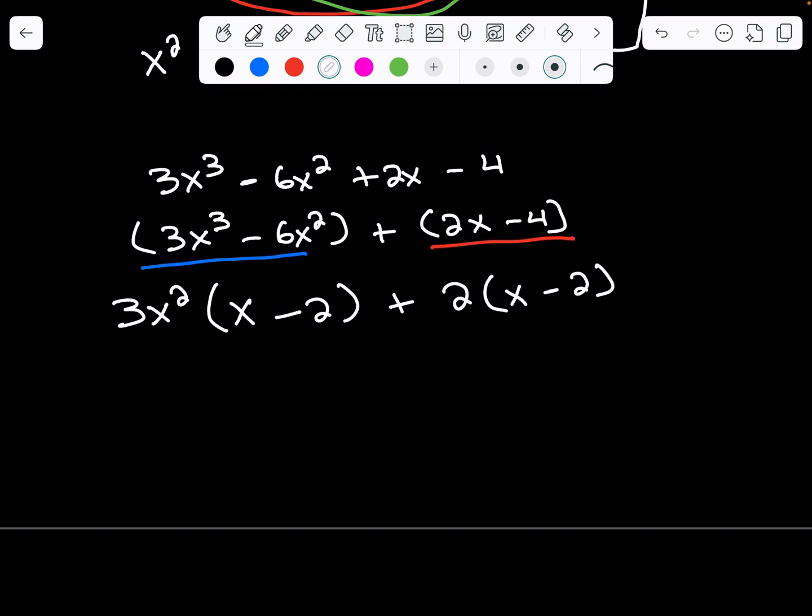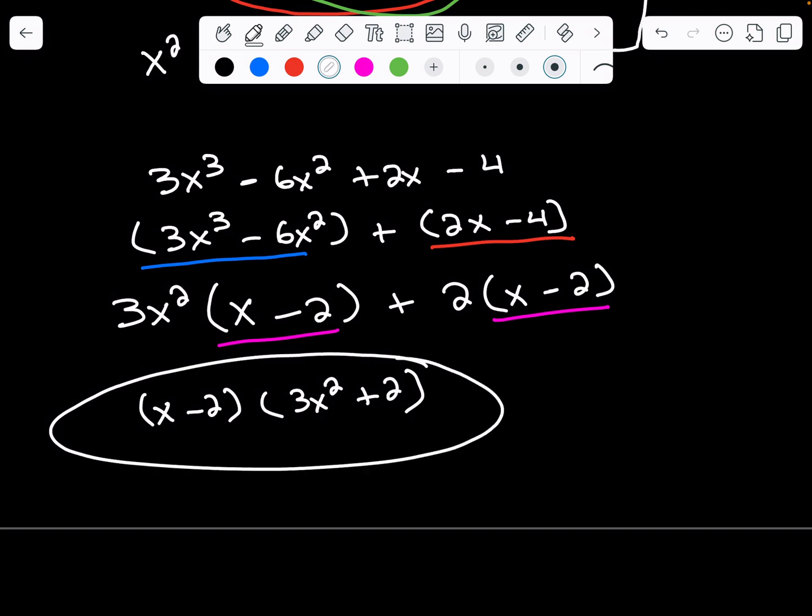Again, this is our stopping point. We want to make sure that we have the exact same binomial here, or we have the exact same pair here, which is (x - 2), and we sure do. So we're going to lead with that. We're going to say (x - 2)(3x² + 2). And that is our answer.